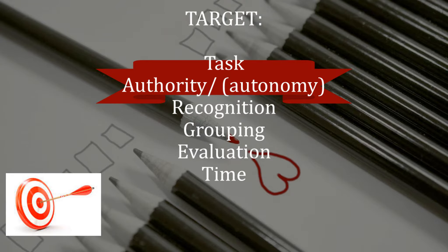A helpful model for integrating ideas about motivation is called TARGET — an acronym for six elements of effective motivation: Task, Authority, Recognition, Grouping, Evaluating, and Time. Each of these elements contributes to a student's motivation either directly or indirectly.